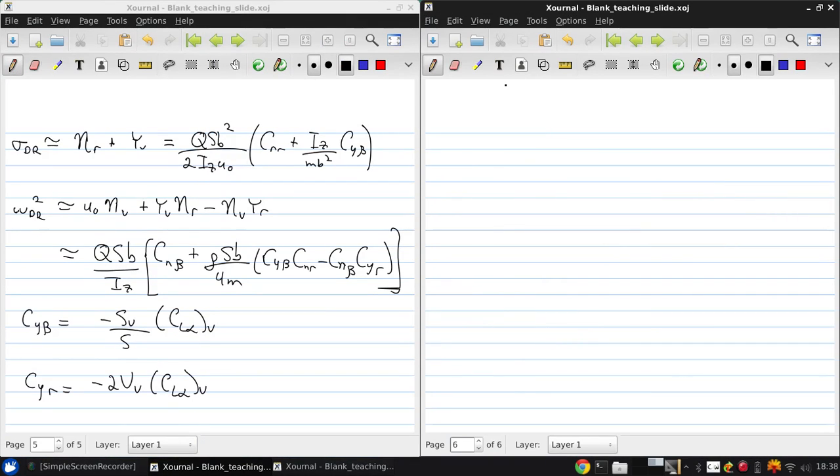Two more derivatives don't appear in the simplified approximation, but are needed if we wanted to solve the full 4×4 system. So, Cₙₚ is negative Cₗ₀/8. And this comes from lifting line analysis.